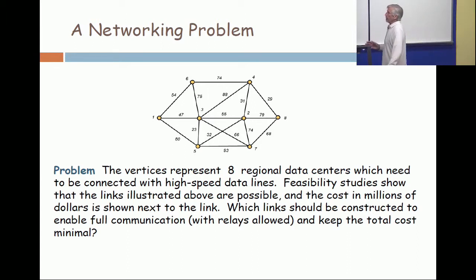Feasibility studies have been done, and these are the candidate edges, the links that can be built. And the cost, say in millions of dollars, is reflected here. To make this an interesting problem, you should have 50, 60, 70 vertices at a minimum, but 50,000 or 500,000 makes it even more challenging.